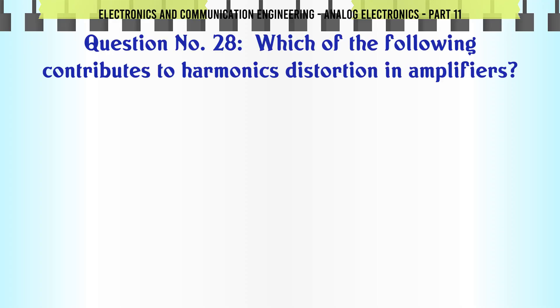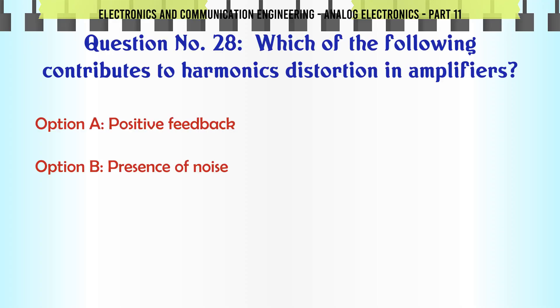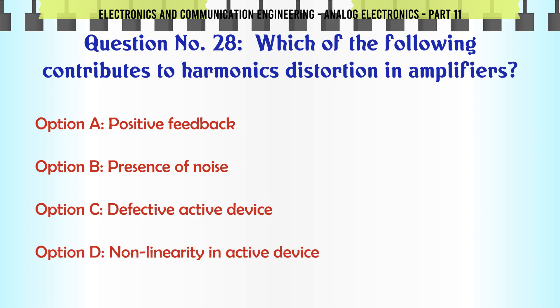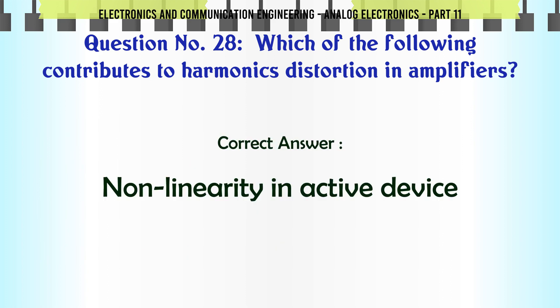Which of the following contributes to harmonic distortion in amplifiers? A. Positive feedback. B. Presence of noise. C. Defective active device. D. Non-linearity in active device. The correct answer is: Non-linearity in active device.